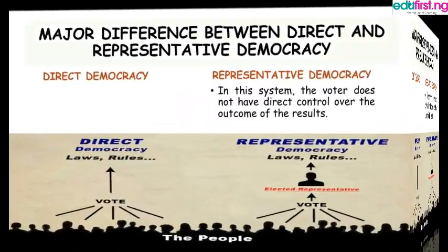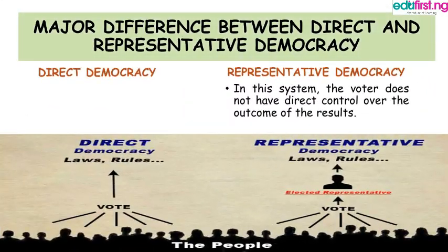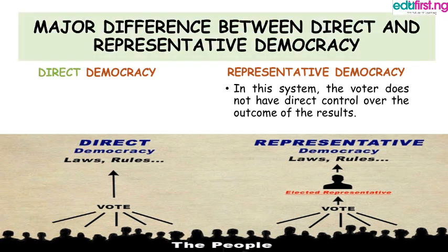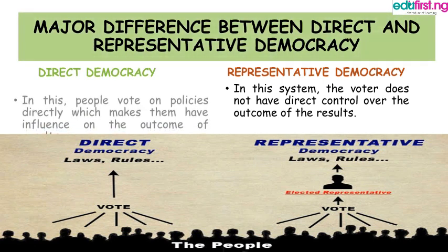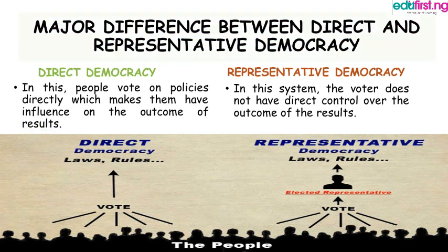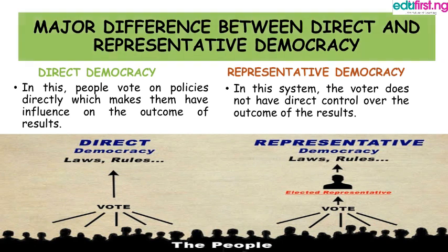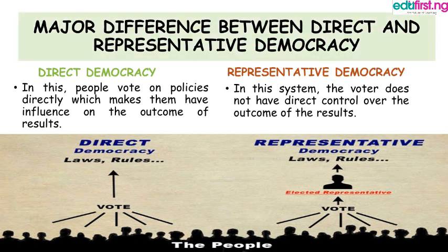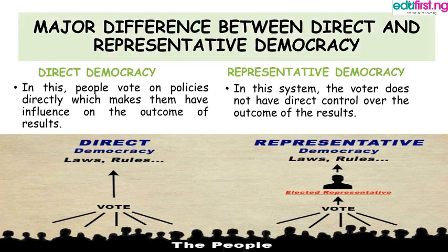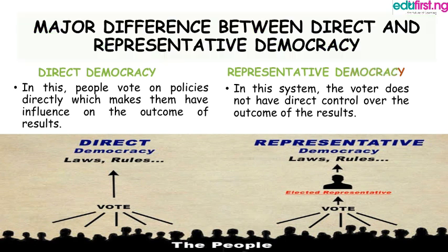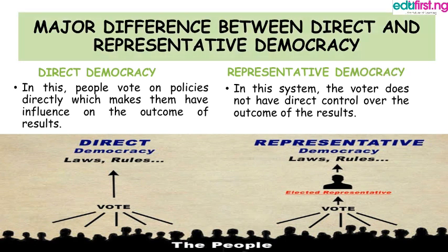What is the major difference between direct and representative democracy? Under direct democracy, people vote on policies directly, which makes them have influence on the outcome of results. Under representative democracy, the voter does not have direct control over the outcome of the results.